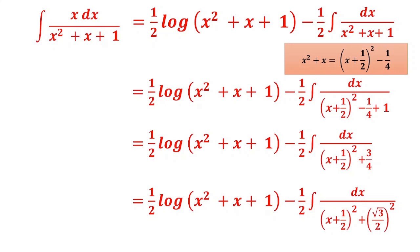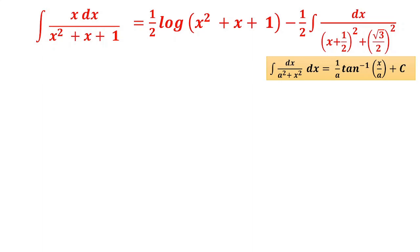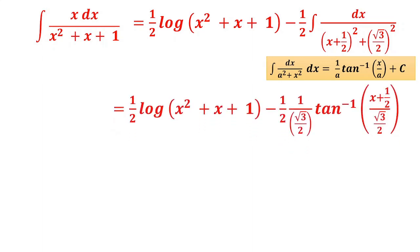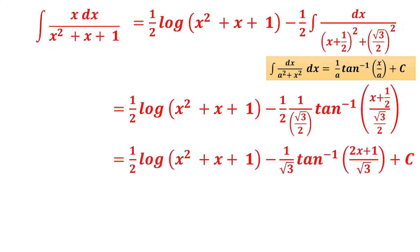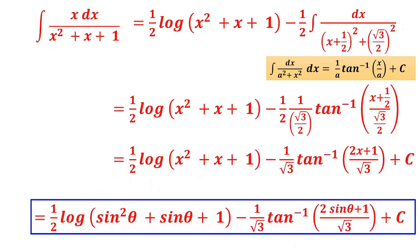Convert 3/4 to (√3/2)² to match the form x²+a². Apply ∫dx/(x²+a²) = (1/a)·tan⁻¹(x/a) with a=√3/2 and x replaced by x+1/2. This gives (1/(√3/2))·tan⁻¹((x+1/2)/(√3/2)) = (2/√3)·tan⁻¹((2x+1)/√3). Since we used substitution x=sinθ, re-substitute: replace x with sinθ to get the final answer in terms of θ.